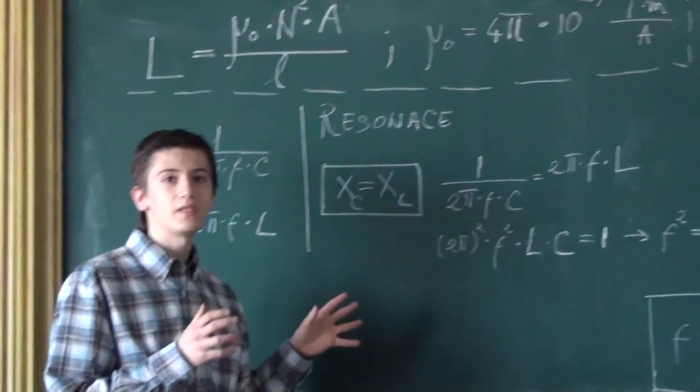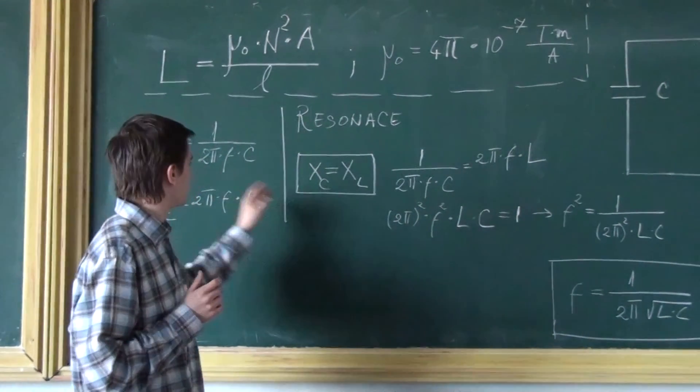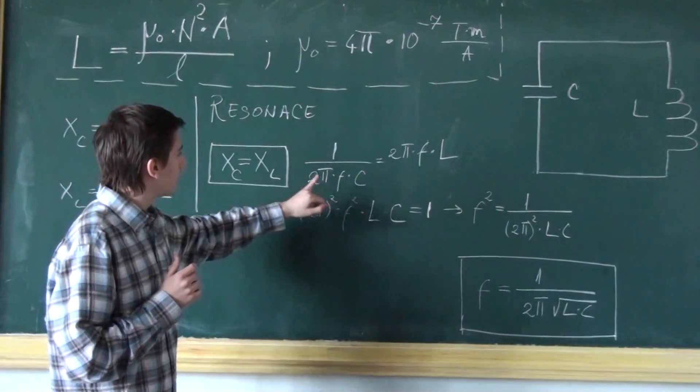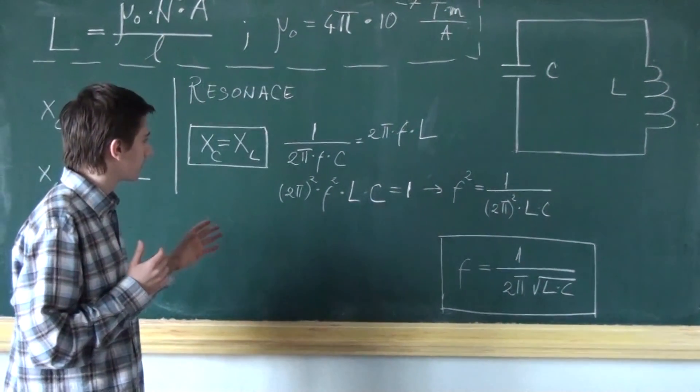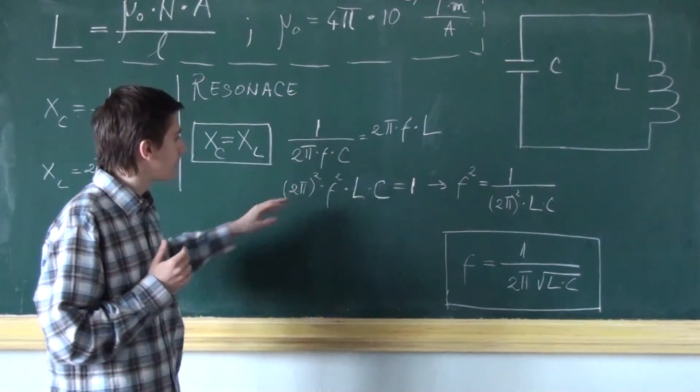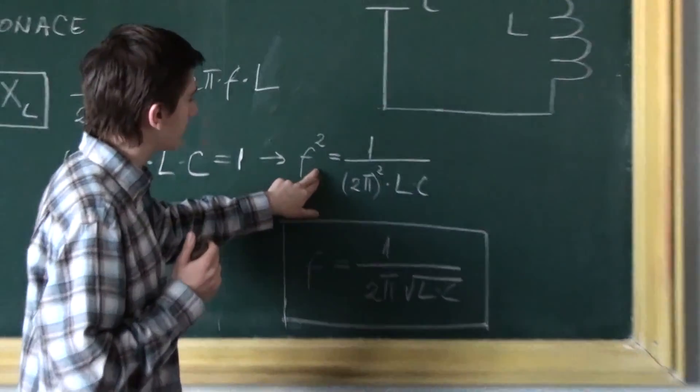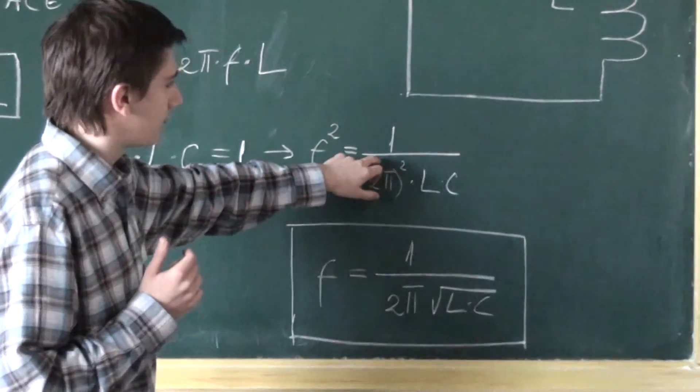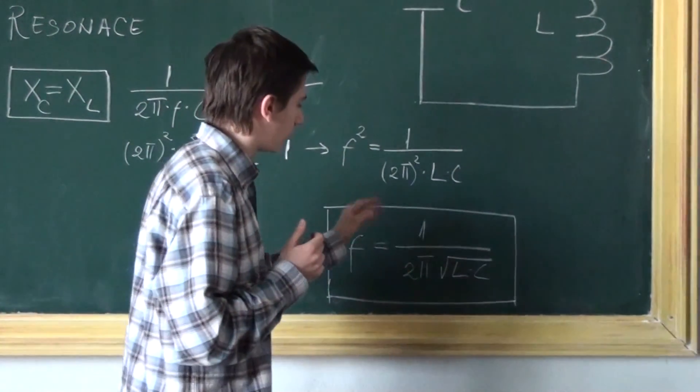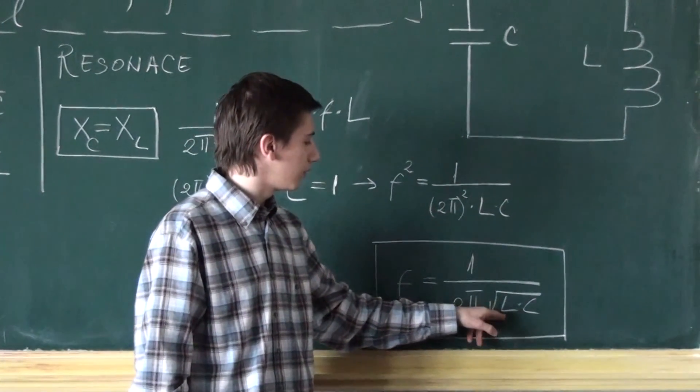So when the circuit resonates, both of them must be equal. And I'm going to try to find the frequency. So I'm going to multiply these two, which will equal 1. And the frequency, the square of the frequency is equal to this. And by extracting the root, we have that the frequency equals 1 over 2π multiplied by square root of L multiplied by C.